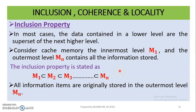The inclusion property means that all information items are originally stored in the outermost level Mn — that is, in the hard disk. All information is originally stored in the outermost level, the hard disk.